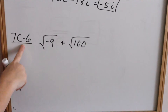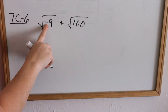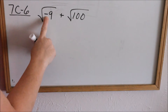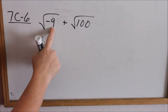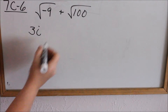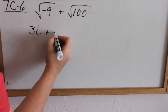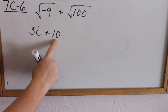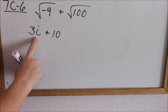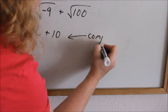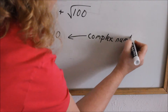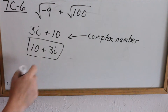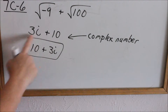Let's look at 7c6. This number is imaginary, and this one is a real number. The negative under the radical implies imaginary, so pull it out as an i. Square root of 9 is 3, giving 3i, plus square root of 100 is 10. I cannot add i's to whole numbers — I cannot add imaginary numbers to real numbers. When you have an imaginary number and a real number, this is called a complex number. Normally it is written with the real number first and then the imaginary number, and you leave it just like that.